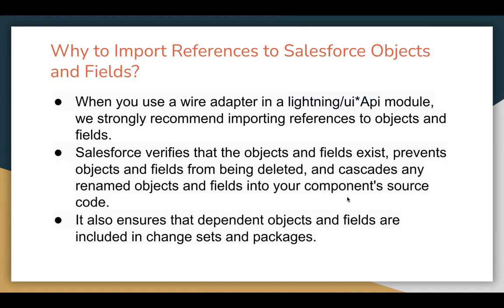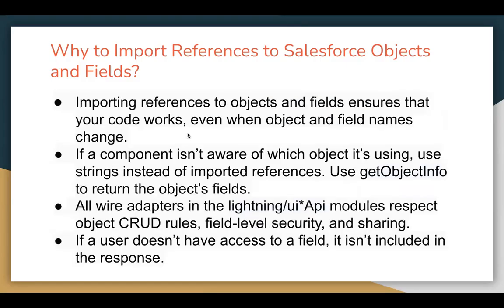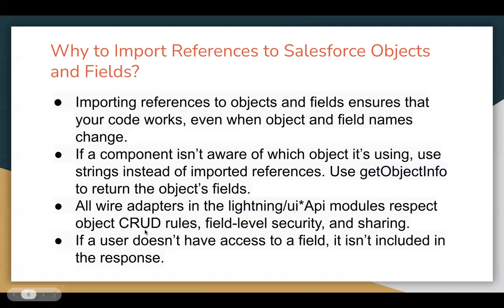It also ensures that dependent objects and fields are included in changesets and packages. So this is the benefit: if you import references of a particular field with the help of an import statement, then going forward, importing references to objects and fields ensures that your code works even when object and field names change. All wire adapters in the lightning slash UI asterisk API modules respect object CRUD rules — create, read, update, and delete — field level security and sharing. If a user doesn't have access to a field, it isn't included in the response.